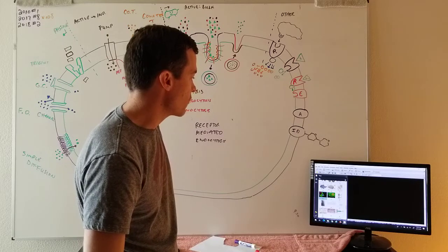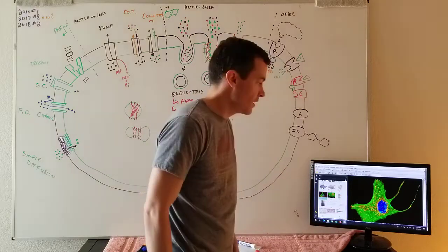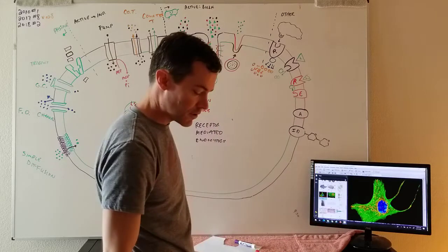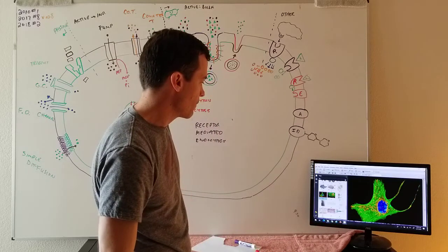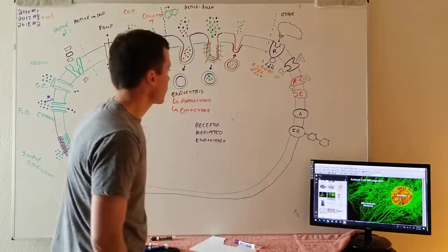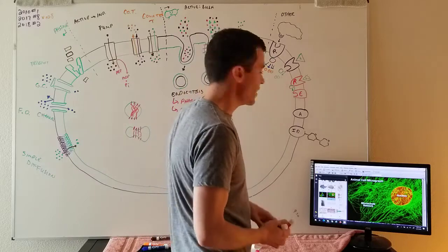In this picture, for example, they've got the cytoskeleton in green and you can see that it's holding the shape of the cell. The blue is the nucleus. Here's some cytoskeleton holding the nucleus in place.